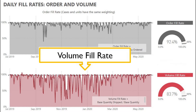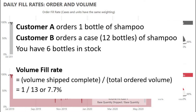The red chart is showing a volume fill rate. For this fill rate, it matters whether the customer ordered a single unit or a case. Suppose customer A orders one bottle of shampoo and customer B orders a case of 12 bottles. You happen to have six bottles in stock. You send a bottle to customer A and choose to ship nothing to customer B until you have a full case ready. In total, you shipped one unit out of 13 units requested. The volume fill rate is 1 divided by 13, or 7.7%.